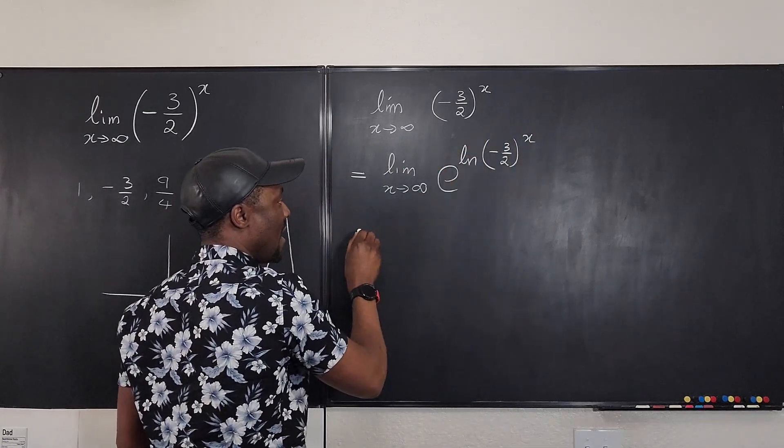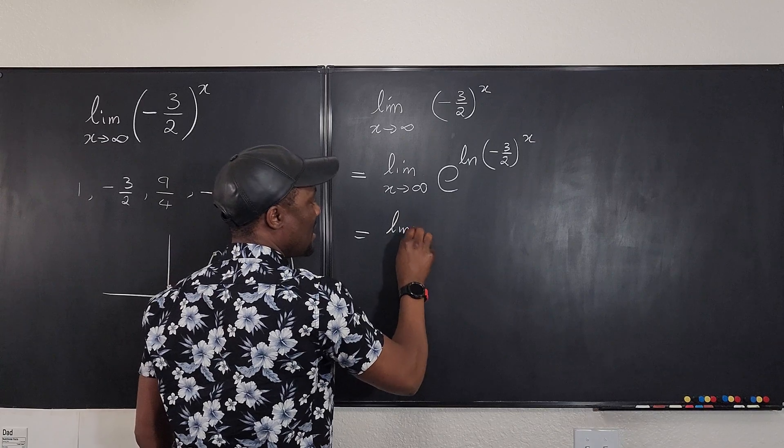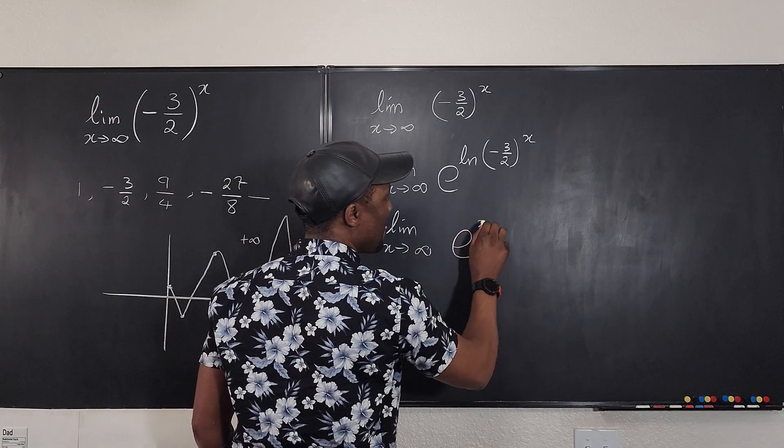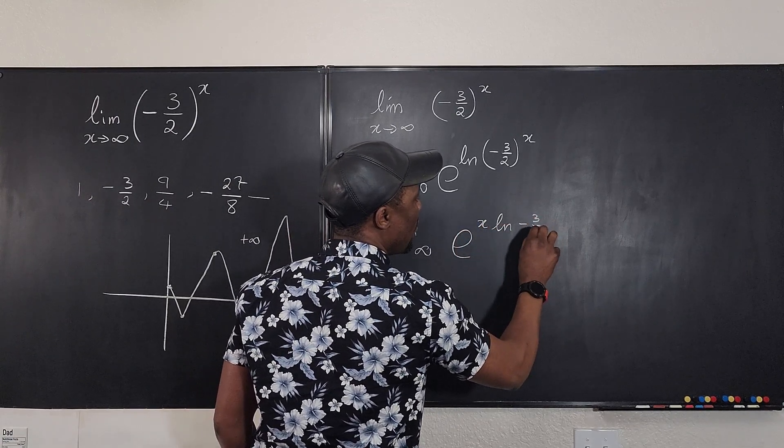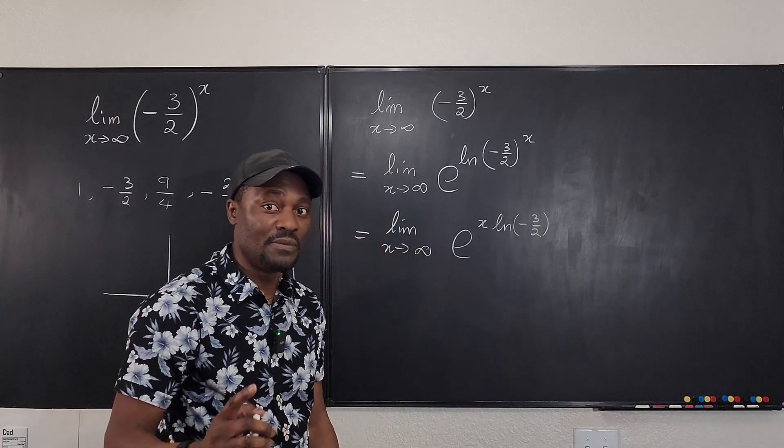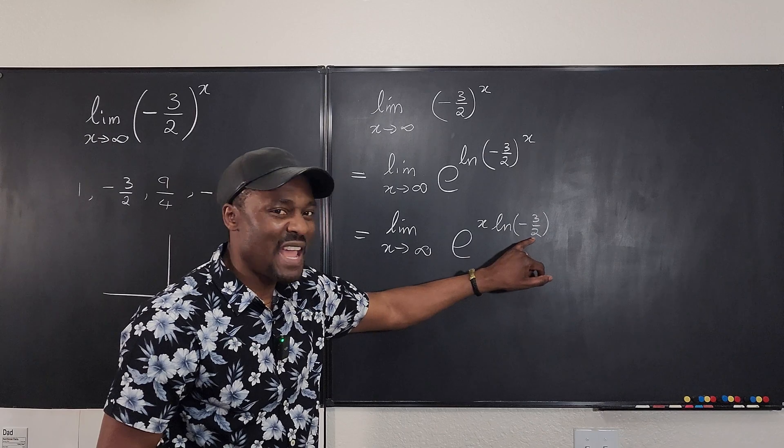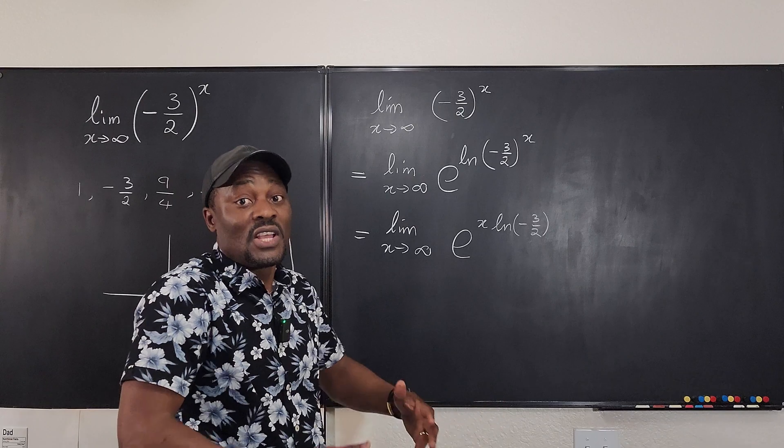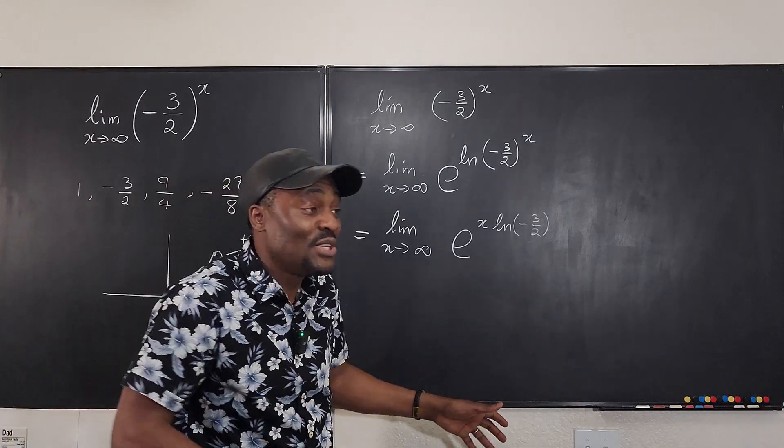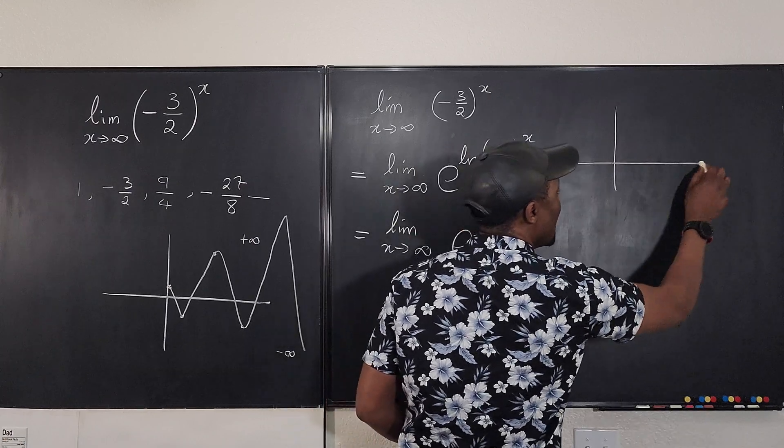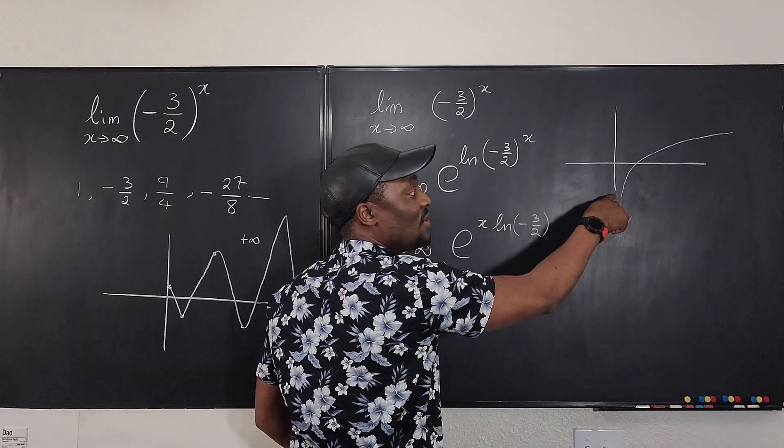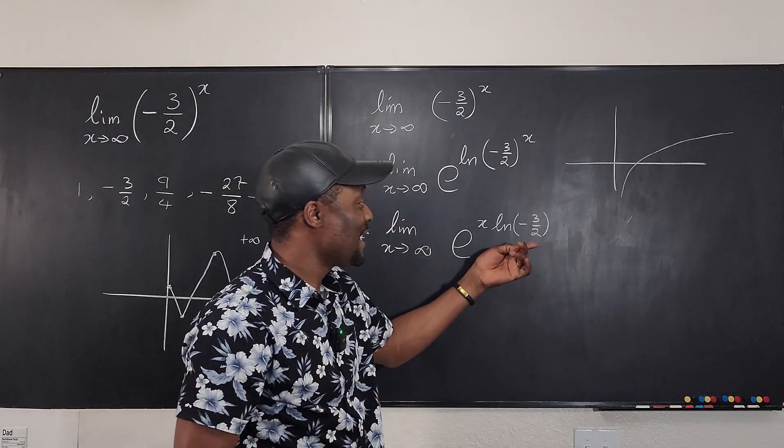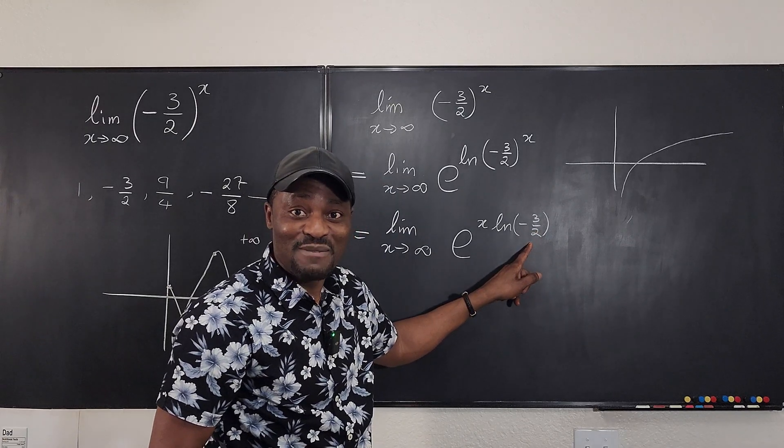Now we can bring this x down behind here so that becomes the limit as x goes to infinity of e to the x natural log of negative 3 over 2. And this is where the problem becomes obvious because the natural log of anything, I mean the argument of natural log cannot be negative because natural log does not exist in the negative region. Remember that the graph of natural log is something that goes this way. It does not even get to 0. So the smallest value you can get is anything just before 0. So you don't even get a chance to plug in negative numbers for natural log.